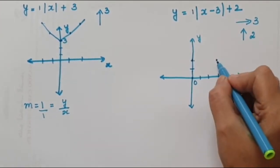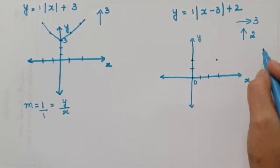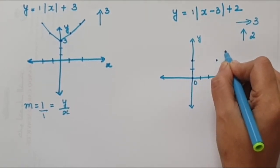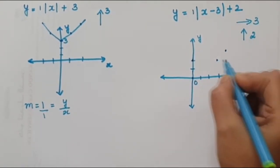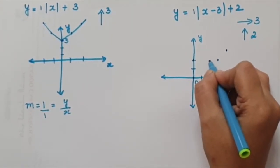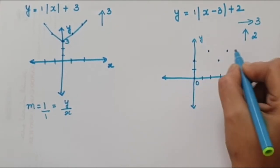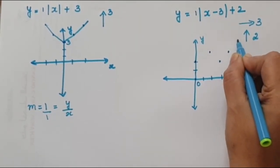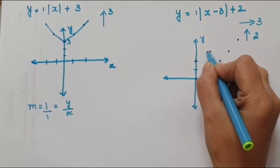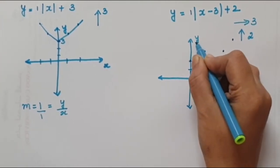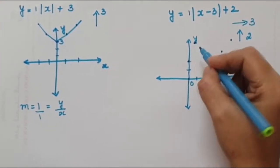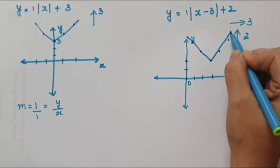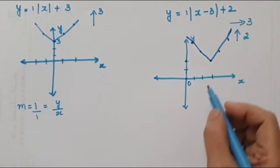The slope is 1. So from the vertex, the x value moves 1 and the y value also moves 1, giving the next point. Again x is 1, y is 1. Continuing this in both directions, we draw all the points and join them to get our V-shaped graph.